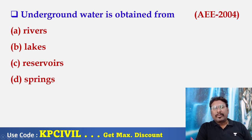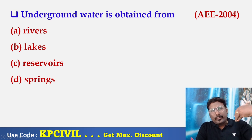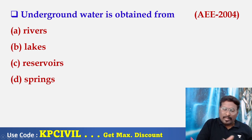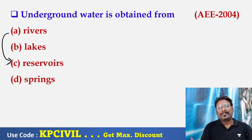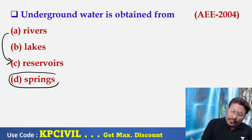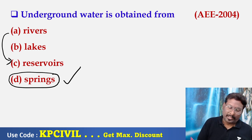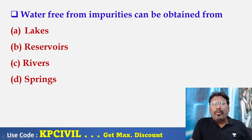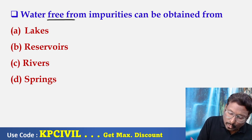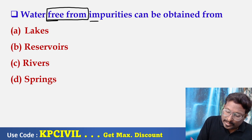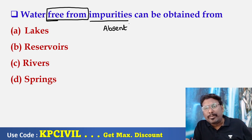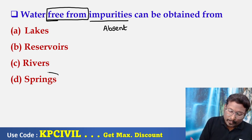Underground water is obtained from — options include river flowing water, lake, subsurface zone of saturation, river, and spring. Spring is the best — very deep from the groundwater body, the groundwater table, very very deep. That is a spring only. Underground water is obtained from springs. Water free from impurity means no impurity — impurities are absent in spring. Already discussed in the previous question.